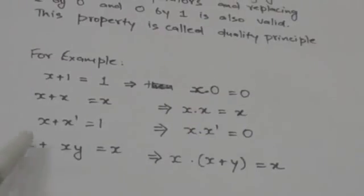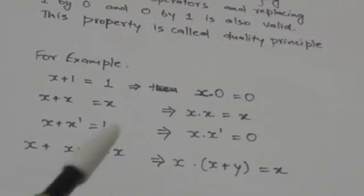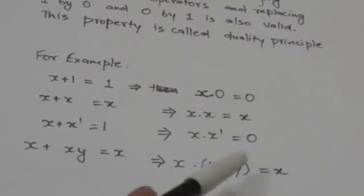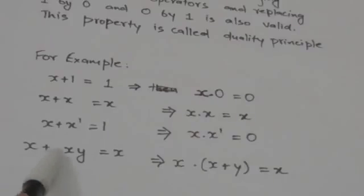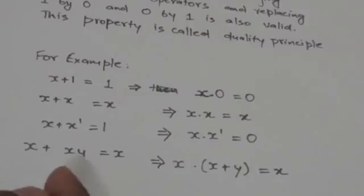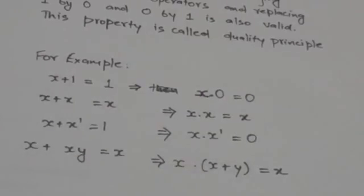Look at this expression: x + xy = x. Its dual would be x · (x + y) = x. The dual expression is obtained by replacing the OR operator by the AND operator and the AND operator by the OR operator. Since this expression is true, its dual will also be true. Thank you very much.